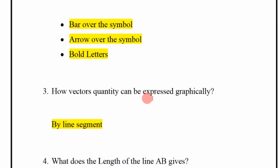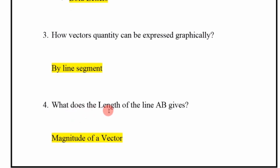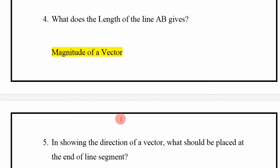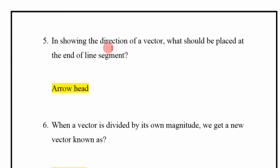What does the length of the line AB give? It gives the magnitude of a vector. In showing the direction of a vector, what should be placed at the end of the line segment? An arrowhead.